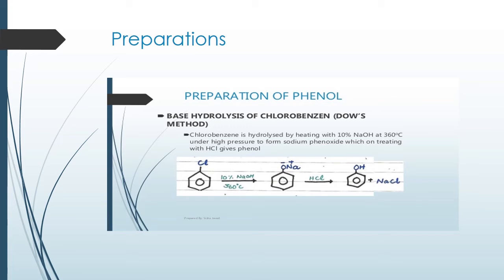Phenol can be prepared from a substituted benzene, where one hydrogen of benzene is replaced by another group. For example, chlorobenzene is a substituted benzene where one hydrogen is replaced by chlorine. You studied chlorobenzene in the benzene chapter under electrophilic substitution reaction — specifically halogenation.